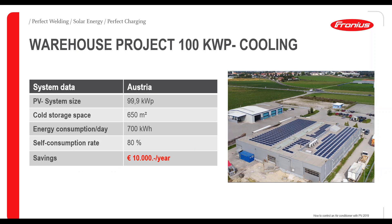Another project is a commercial cooling application — a facility with a 99.9 kWp PV system and a cold storage space of 650 square feet. The energy consumption per day is around 700 kWh for cooling the building and the goods within it. The warehouse achieves a self-consumption rate of about 80% because warehouse cooling runs all day, so PV surplus energy is used to operate the air conditioning of the warehouse. This results in savings of around 10,000 euros per year — a relatively high saving from building a PV system just to operate the warehouse cooling.